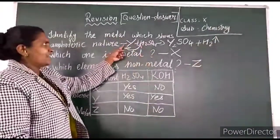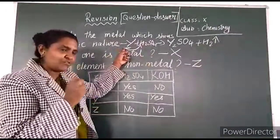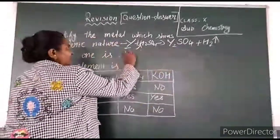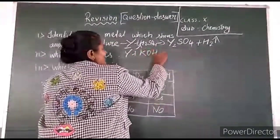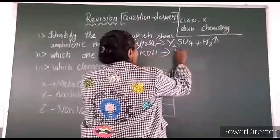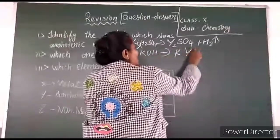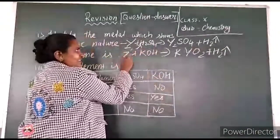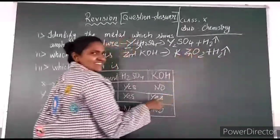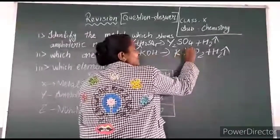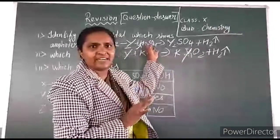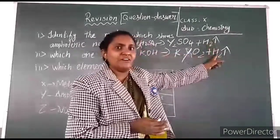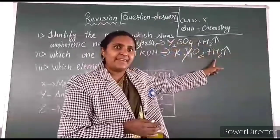The second equation: write the amphoteric nature showing reaction with base. You have to write both equations — element with acid, and element with base. The base here is KOH. So Y reacts with KOH to give KY over 2 plus H₂. Usually in textbooks, zinc is used as the example, so you would write zinc. But here the element is Y, so you write Y. In both reactions, hydrogen gas is evolved.